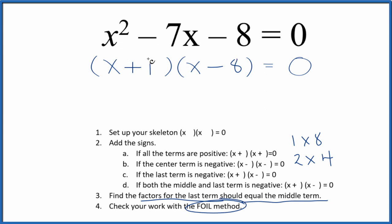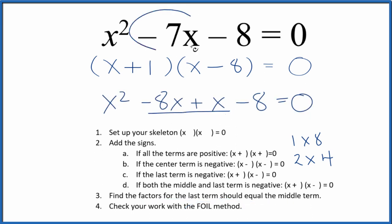Multiply the first, outside, inside, and last. We can combine negative 8x and x. That'll give us negative 7x. We have our negative 8, negative 8, x squared, x squared. Same thing we started with. So we correctly factored x squared minus 7x minus 8.